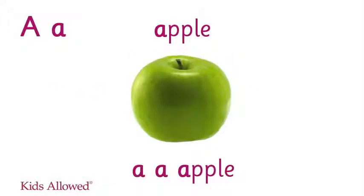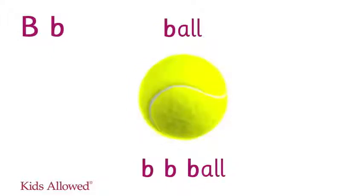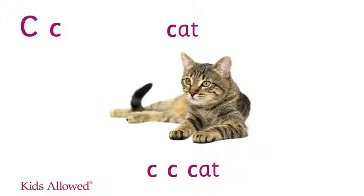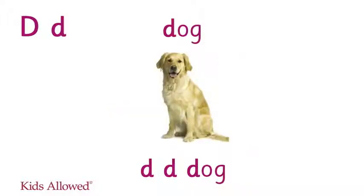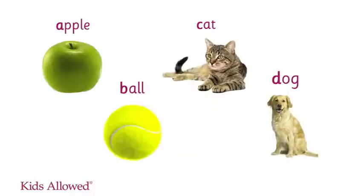A is for apple. A, apple. B is for ball. B, ball. C is for cats. C, cats. D is for dog. D, dog.